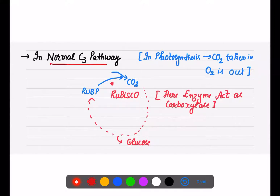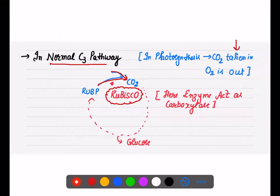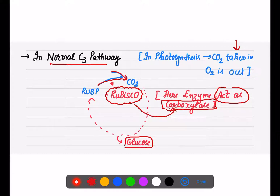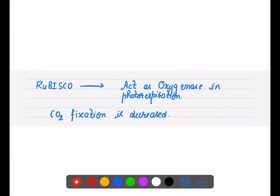In the normal C3 pathway, CO2 is taken in and combines with the help of the enzyme ribulose bisphosphate carboxylase oxygenase — RuBisCO. Here, RuBisCO is functioning as a carboxylase. Glucose is formed and oxygen is released. So with the help of RuBisCO acting as carboxylase, we are able to perform the C3 cycle.